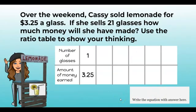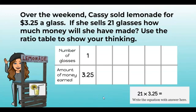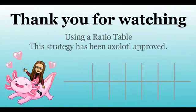Here's the one for you: Cassie sold lemonade for three dollars and twenty-five cents a glass. If she sells 21 glasses, how much money will she have made? Use your ratio table. You don't have to use the 'five is half of ten' strategy this time — just keep it simple, fewest steps possible. Don't forget to write down your equation and turn it in on Monday. I hope you enjoyed this video! These strategies will definitely help you when you start dividing decimals. Have a great weekend!